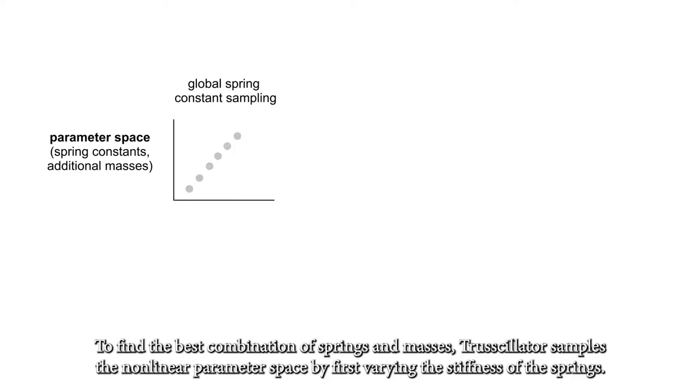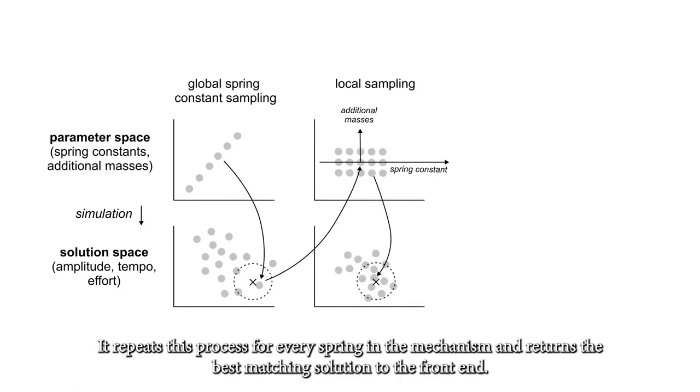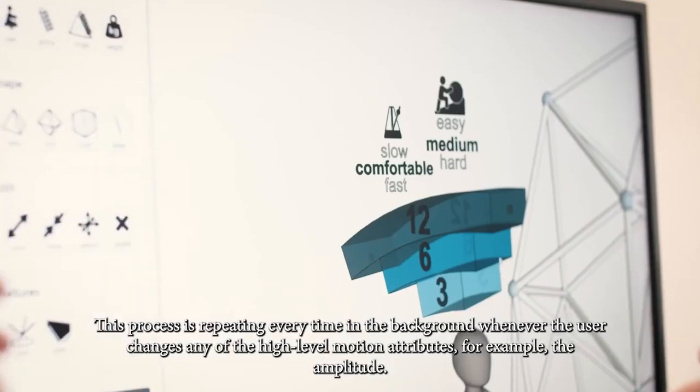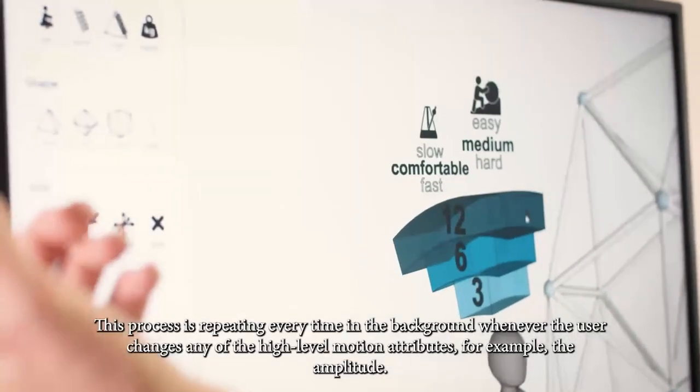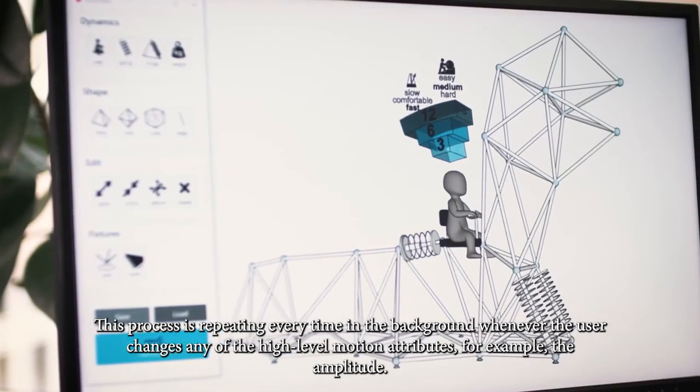To find the best combination of springs and masses, Trussillator samples this non-linear parameter space by first varying the stiffness of the springs. After finding the approximate spring constant, it runs another batch of simulation, now varying the mass of the device to optimize the eigenfrequency. It repeats this process for every spring in the mechanism and returns the best matching solution to the frontend. So this process is repeating every time in the background whenever the user changes any of the high-level motion attributes, for example the amplitude.